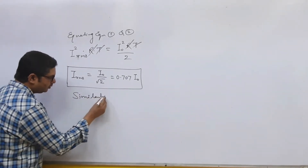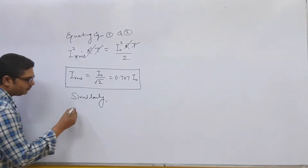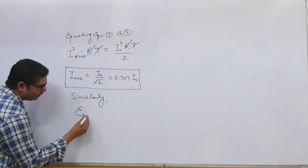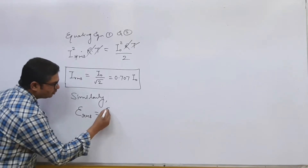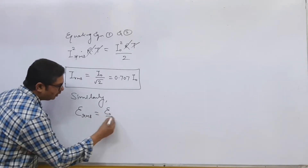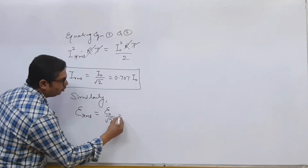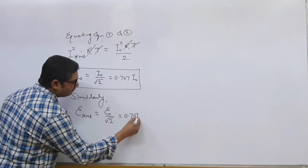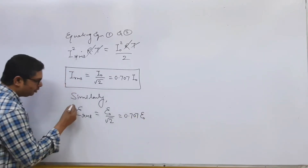Similarly, for EMF we have E_RMS equals E₀ / √2, which equals 0.707 E₀.